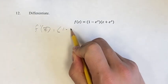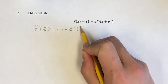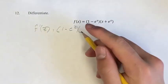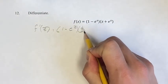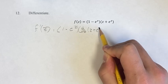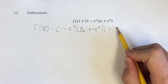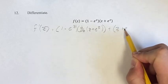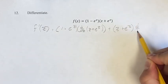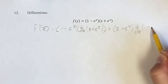So starting out, we have the first term times the derivative of the second term plus the second term times the derivative of the first term.